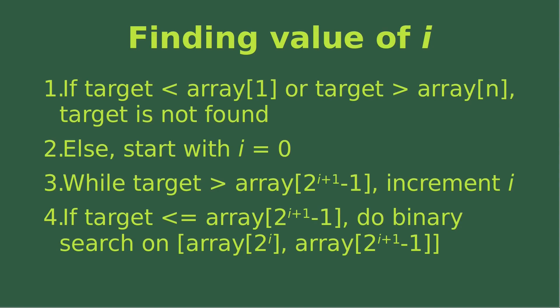Number two, if it is not the case, we have to find out the value of i, so we start with i equals 0. Number three, while the target is larger than the array element corresponding to the index 2 to the power of i plus 1 minus 1, then we increment i — that means we add i by 1.